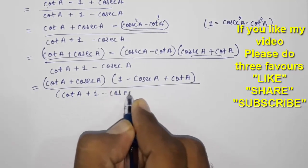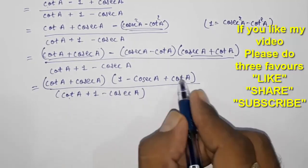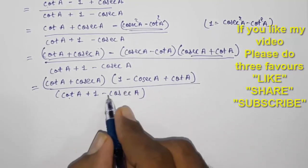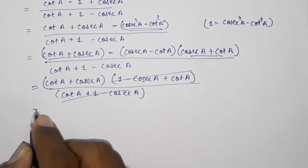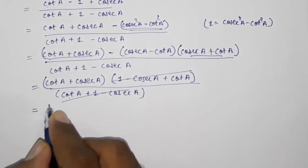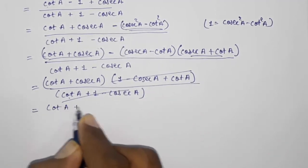Now you can match all these terms: cot A plus cot A, plus 1 plus 1, minus cosec A. So these both will get cancelled and we got our answer, that is cot A plus cosec A.